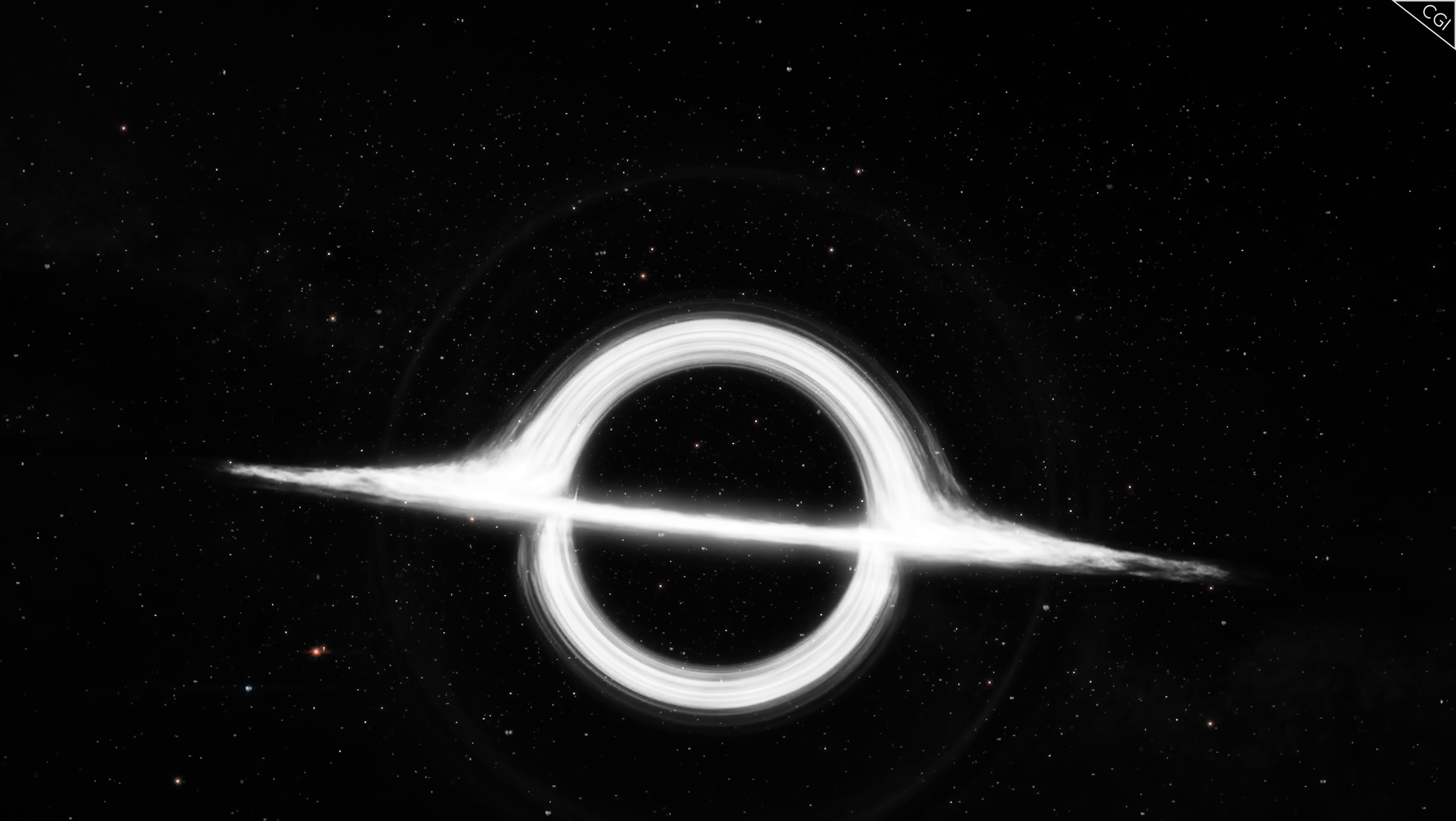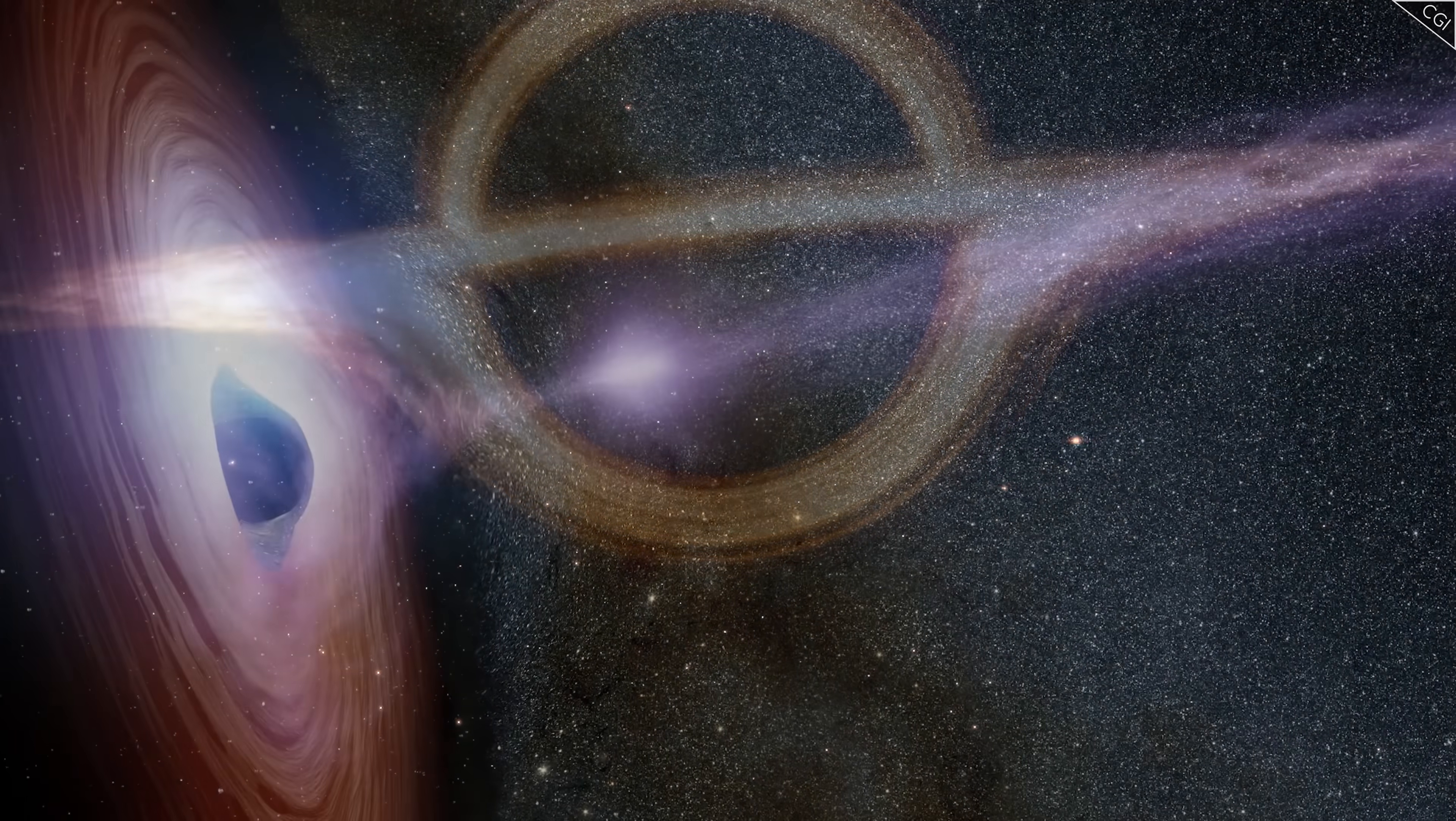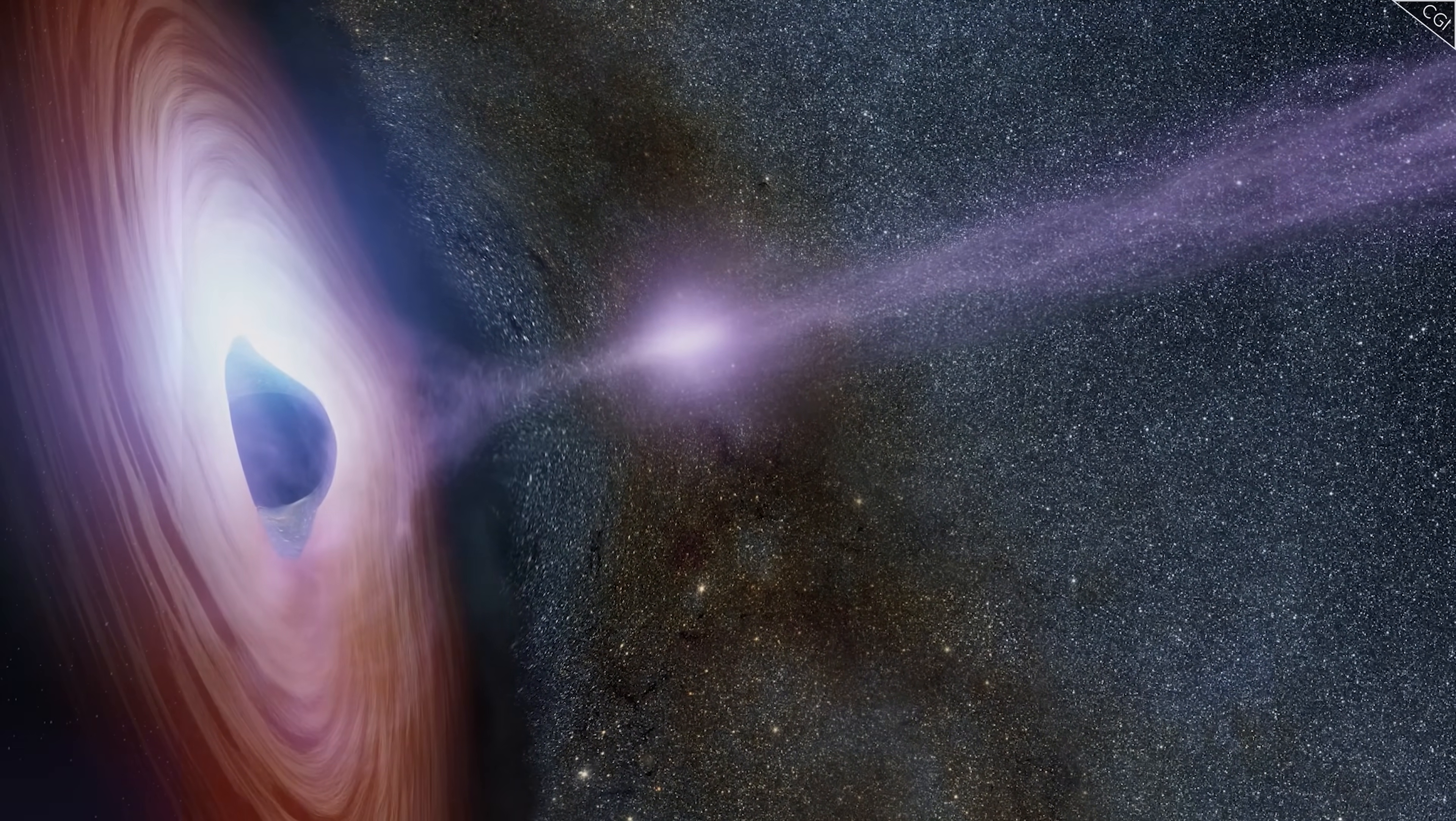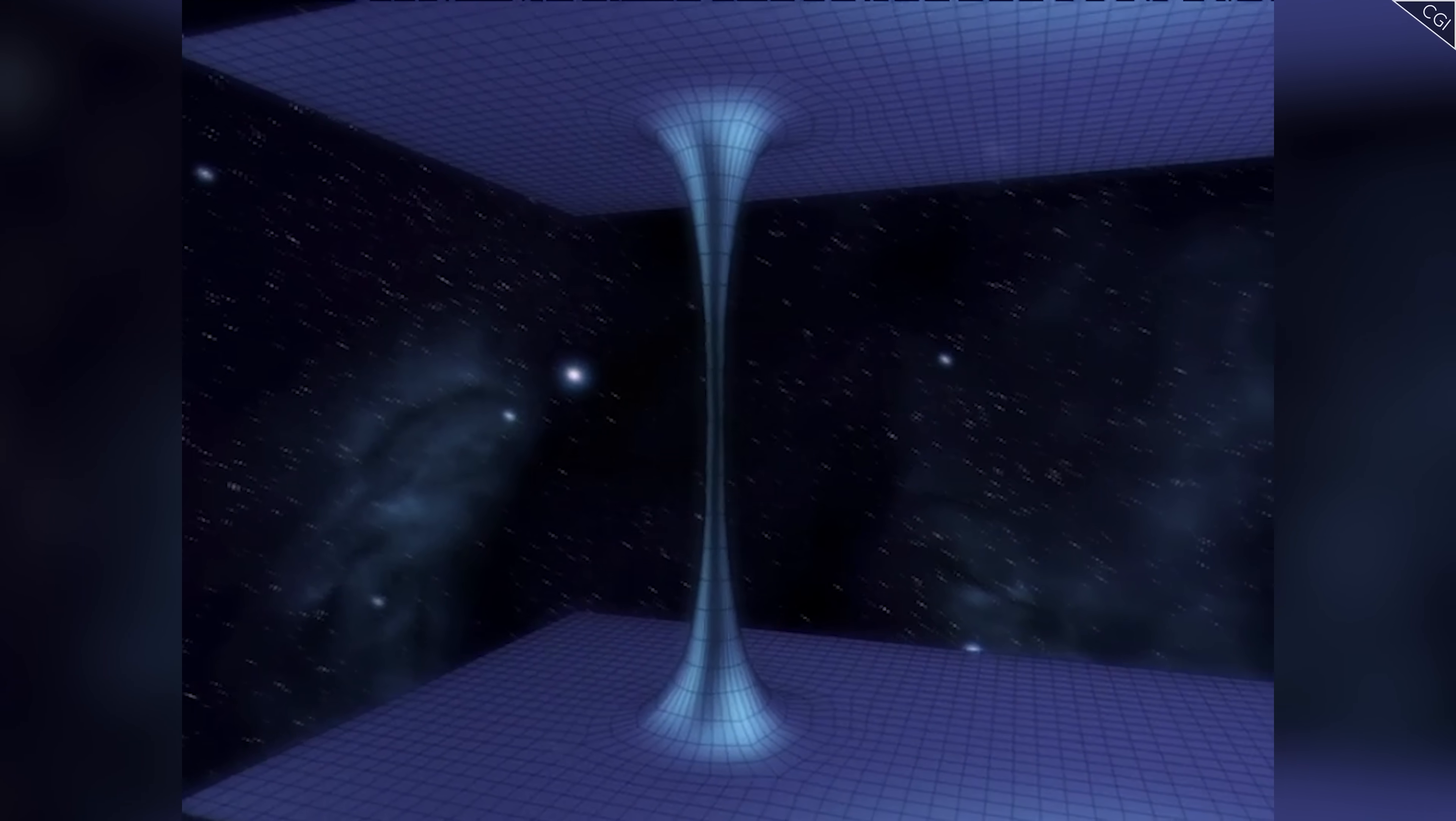White holes get their name because they are, in many ways, the exact opposite of black holes. And in some cases, a black hole and a white hole can be connected by a totally different type of spacetime called a wormhole, which functions as a kind of limbo zone between parallel universes.